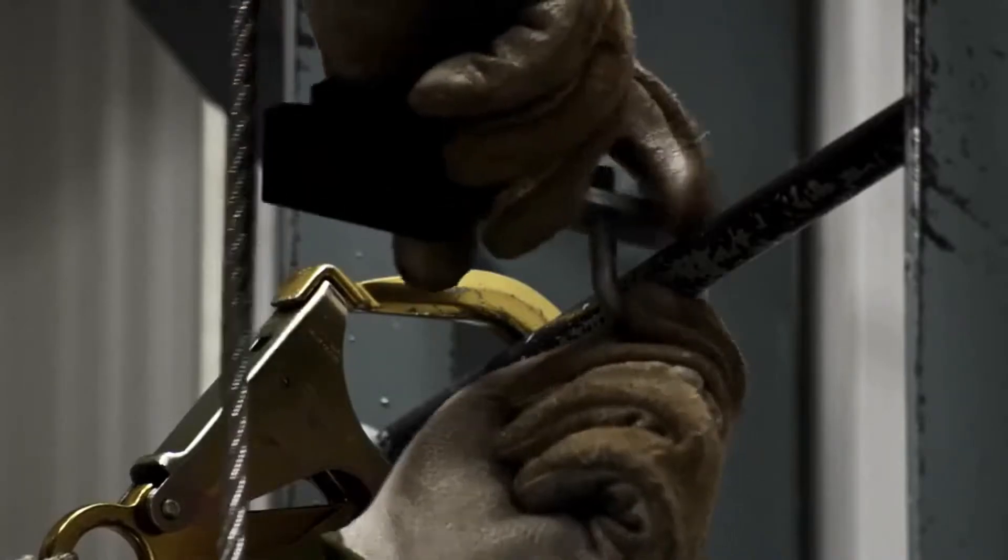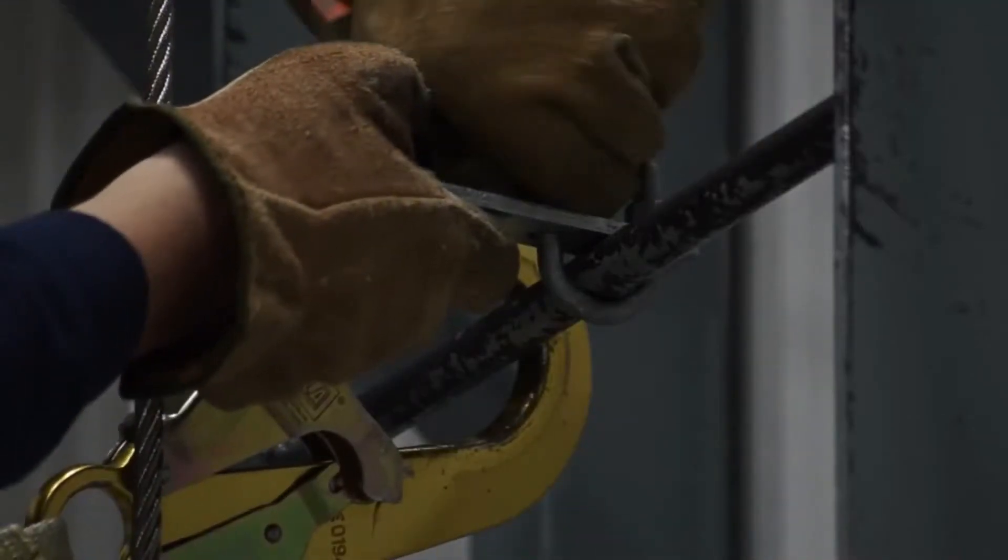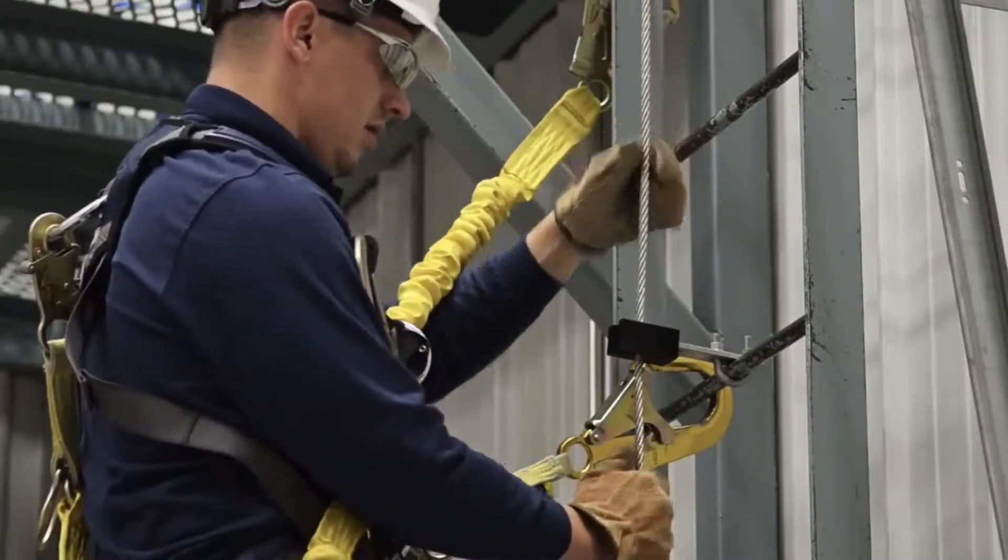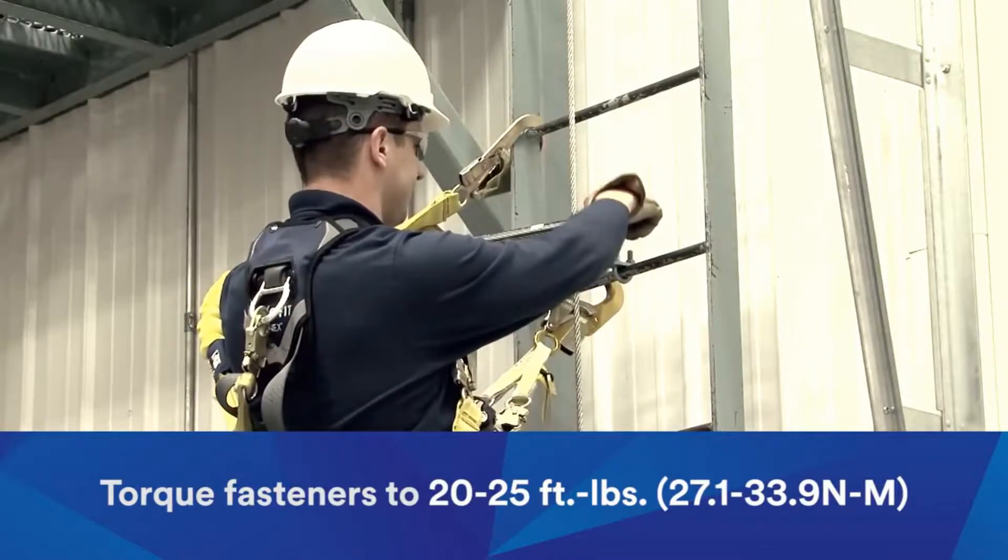Place the guide onto the ladder rung and hand tighten until it is secure. Insert the cable into the guide. Torque the fasteners to 20 to 25 foot-pounds, or 27.1 to 33.9 Newton meters.